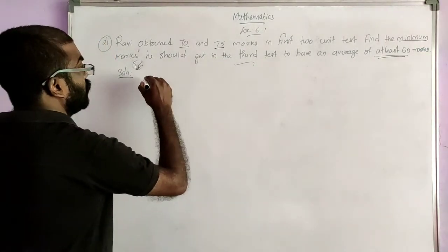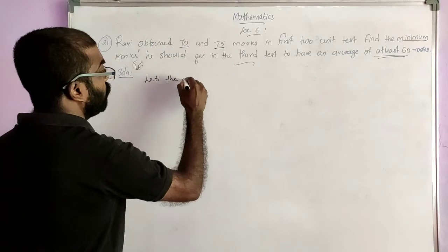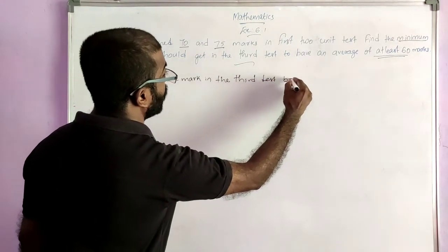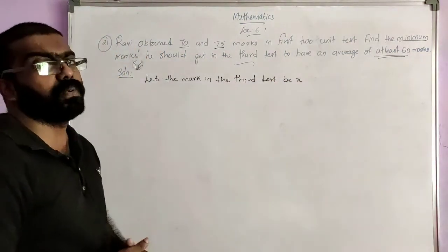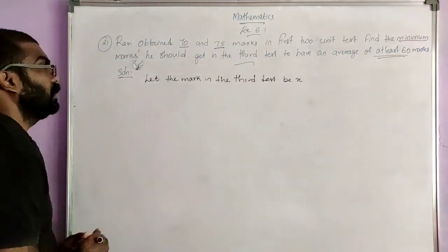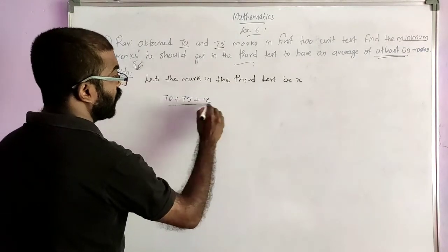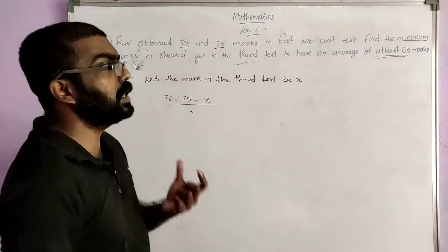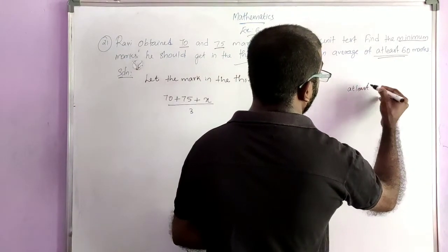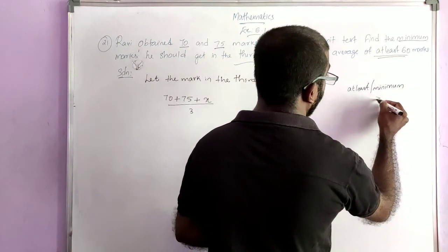Here we can take the marks in the third test as X. Let the mark in the third test be X. We know how to find average — average means sum of observations divided by number of observations. So here, 70 plus 75 plus X divided by 3. Average is at least 60. At least means we use the symbol greater than or equal to — at least or minimum.